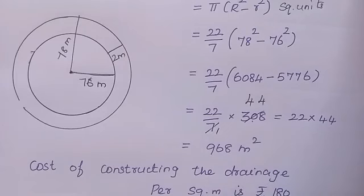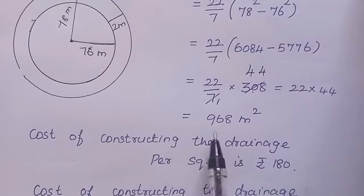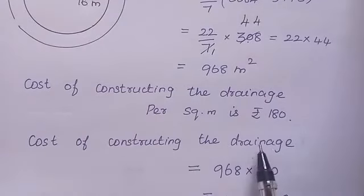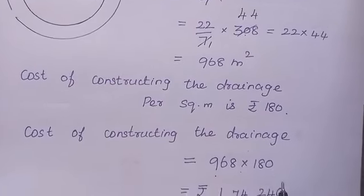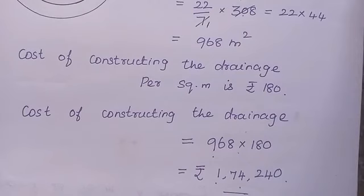Cost of constructing the drainage per square meter is rupees 180. The drainage area is 968 square meters. Therefore, cost of constructing the drainage equals 968 multiplied by 180, which gives rupees 1,074,240. This is the total cost of constructing the drainage.